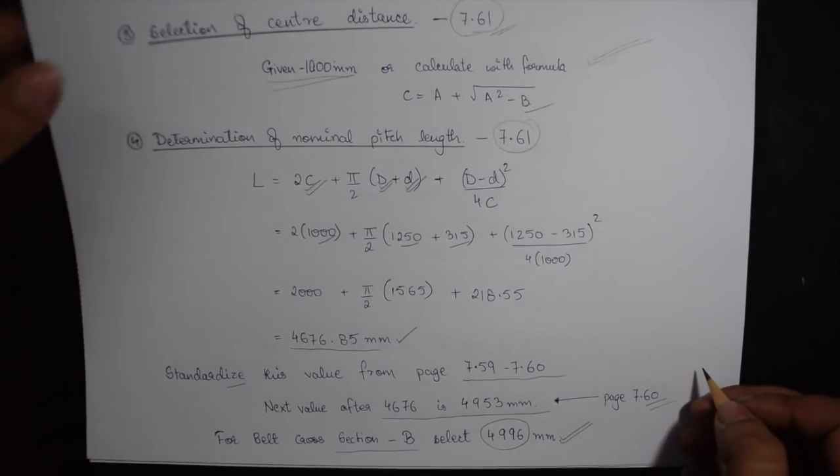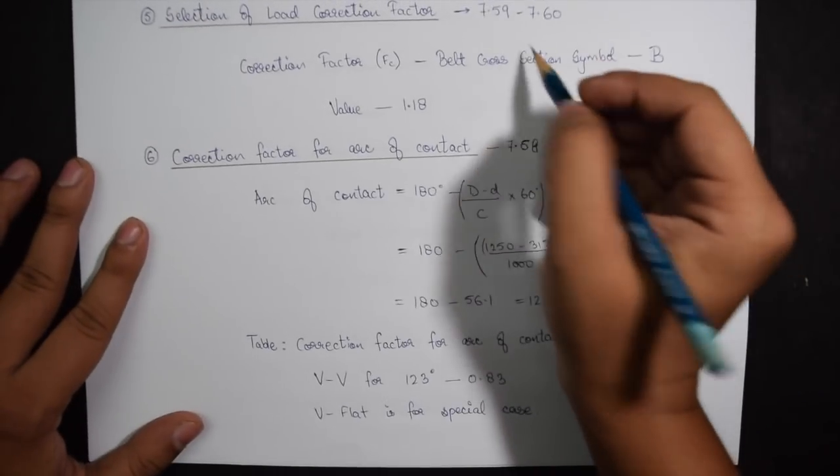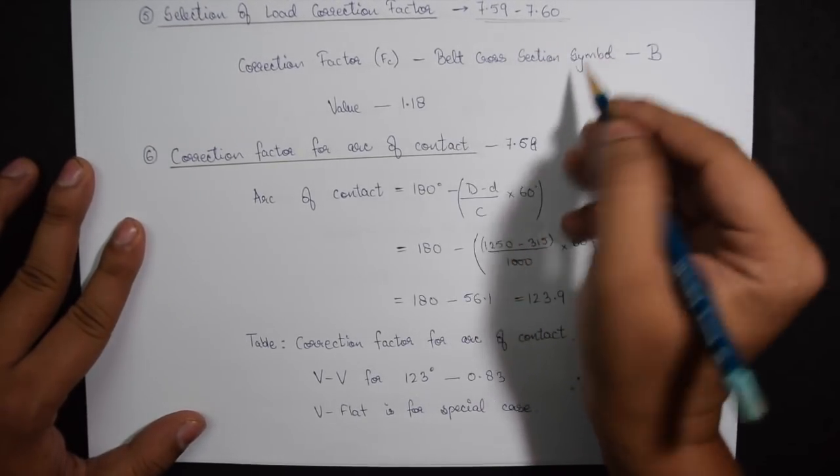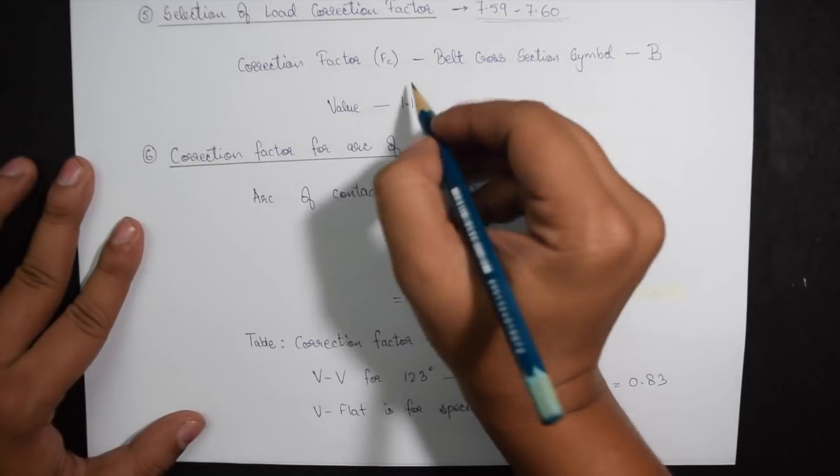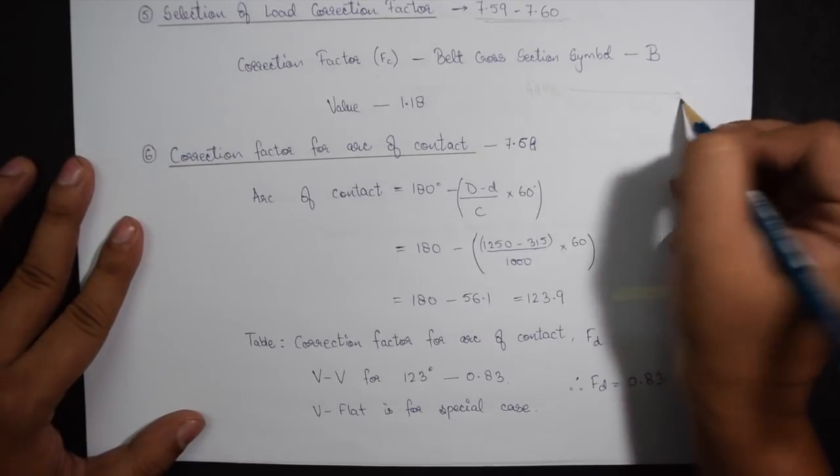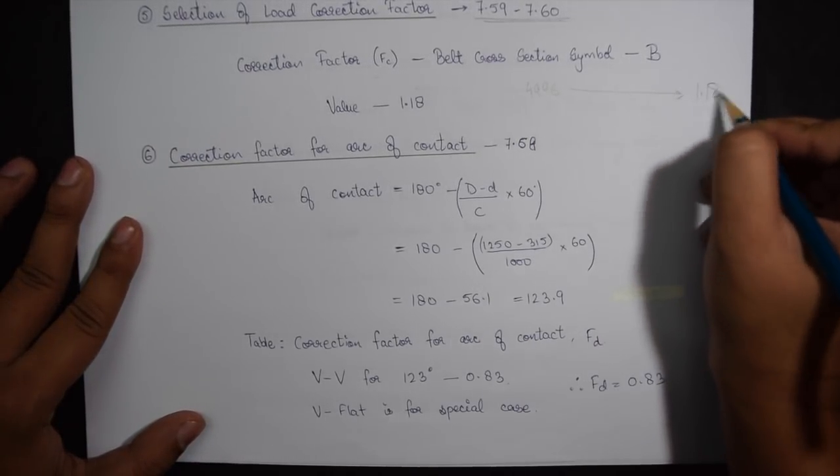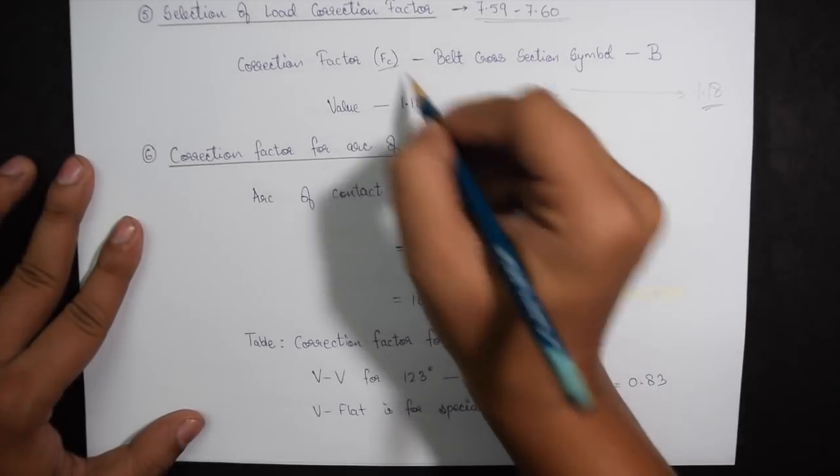Coming to step 5 which is selection of load correction factor again given on the same table but towards the right hand side. Following the same row from 4996 we find the correction factor for belt B is 1.18. So this becomes our value FC that is 1.18.